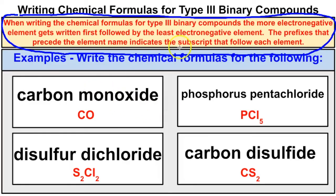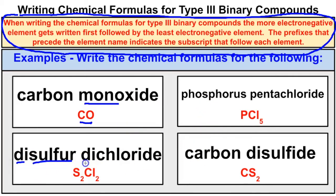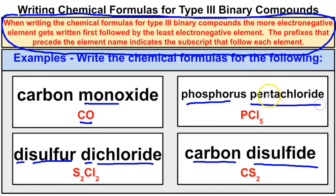The prefixes that precede the element name indicate the subscript that follows each element. For example, carbon monoxide: mono means one oxygen, and because there's no prefix on the first element, carbon also has a subscript of 1, giving us CO. Disulfur dichloride: two sulfurs and two chlorides. Carbon disulfide: two sulfides and one carbon. Phosphorus pentachloride: penta is 5 and Cl is chloride, with one phosphorus, giving PCl5. These prefixes tell us the subscripts for each atom in the compound.